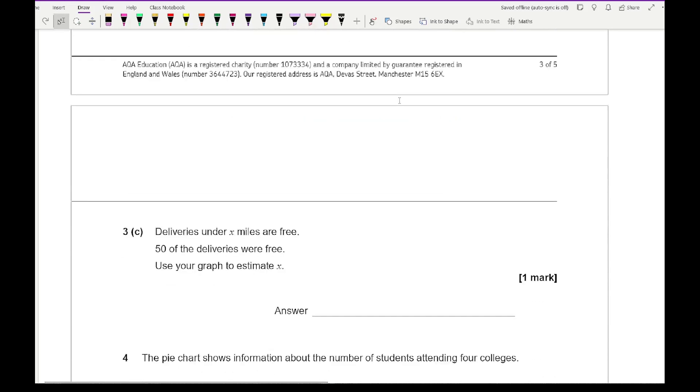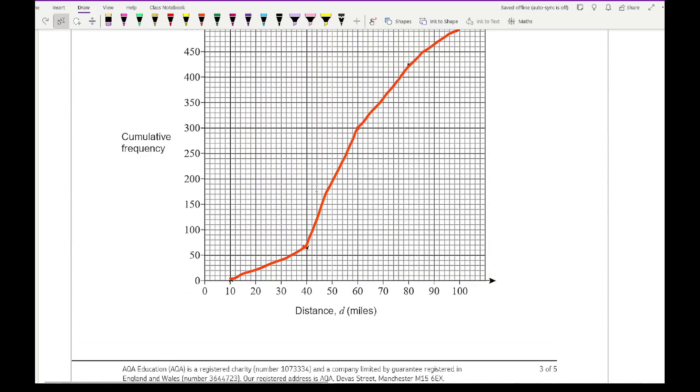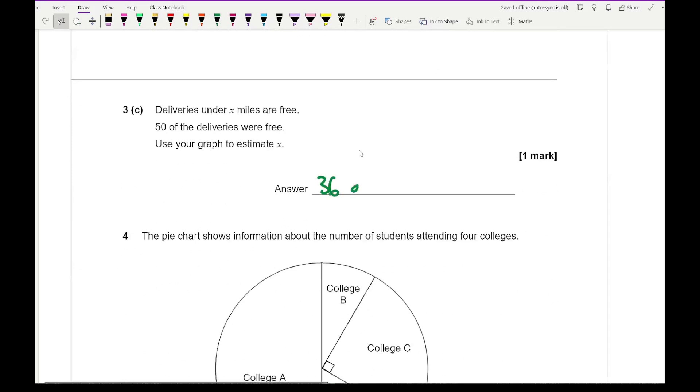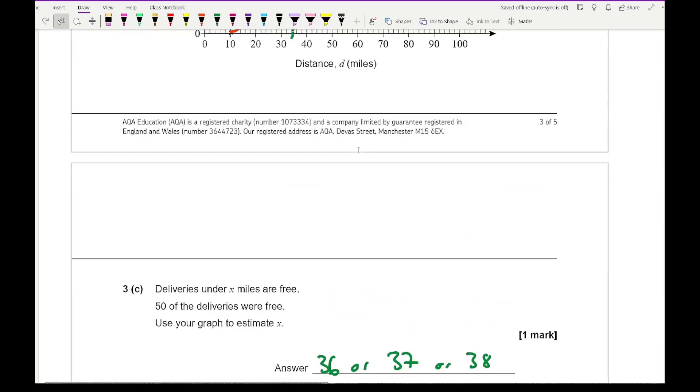Question 3c says deliveries under x miles are free and 50% of the deliveries were free. Use your graph to estimate x. What we need to do is find 250 on the y-axis, project across, and as soon as it hits the curve we move down. Any acceptable answer if you've plotted it correctly should be around about 36, 37, or 38.